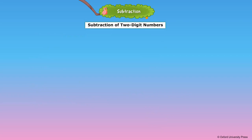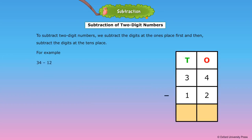Subtraction of two-digit numbers. To subtract two-digit numbers, we subtract the digits at the 1's place first and then subtract the digits at the 10's place. For example, 34 minus 12.